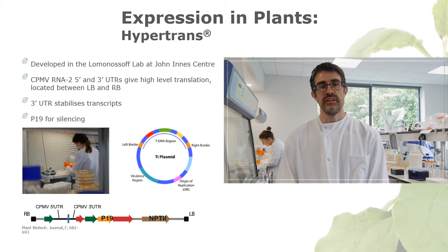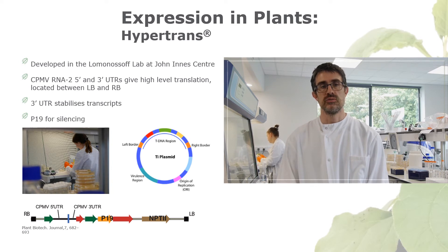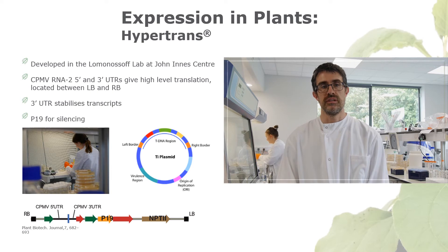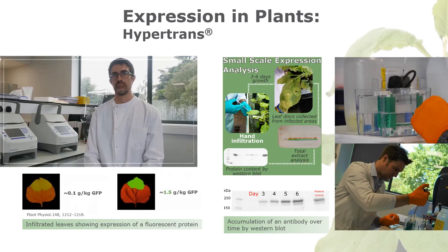The beauty of the HyperTrans system is that we can change what genetic information is contained on the plasmid to whatever we want to eventually make. The Agrobacterium will still carry out the same function even with different genetic information in the plasmid. Once infiltrated, the plants begin producing the recombinant protein very quickly, and over time the target protein begins to accumulate within the cell.